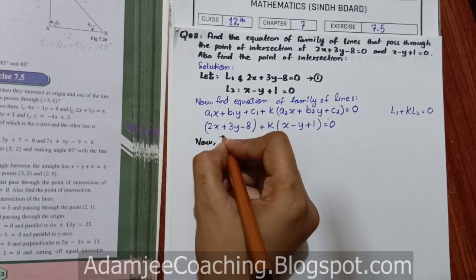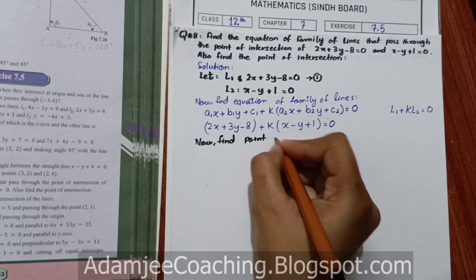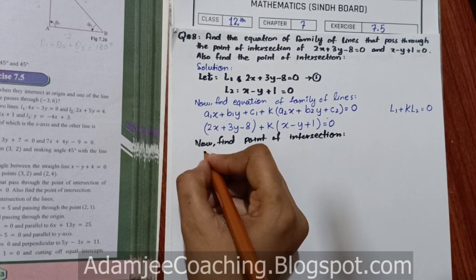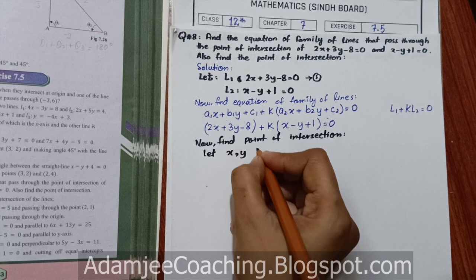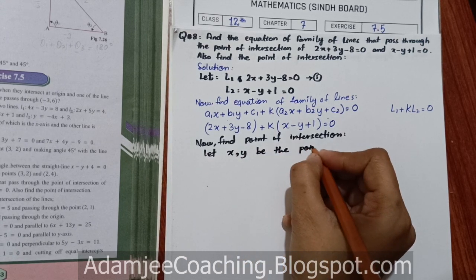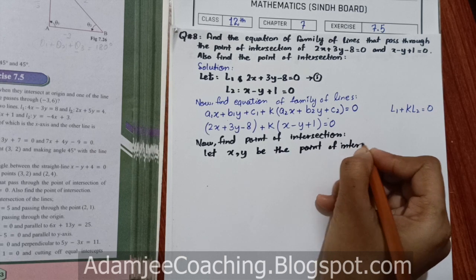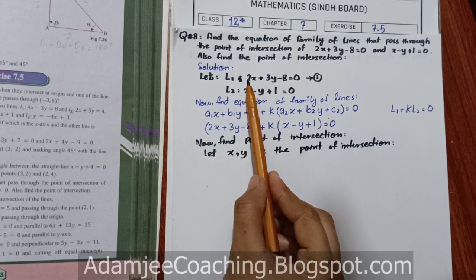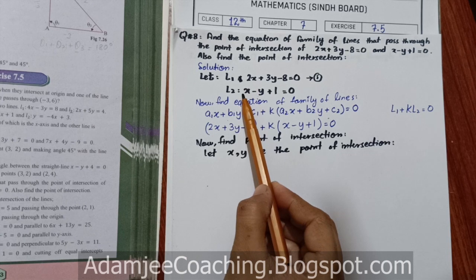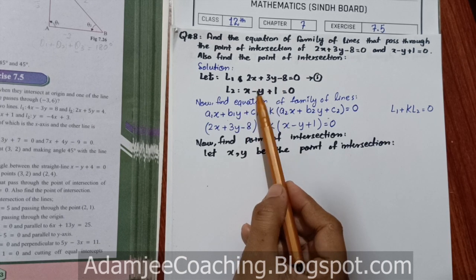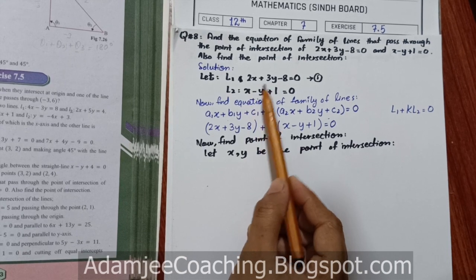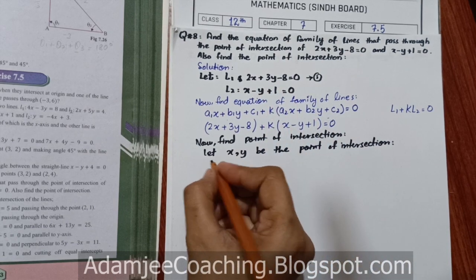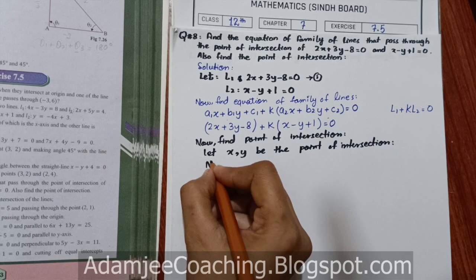Now, point of intersection. We need to find the point of intersection, i.e., find the values of x and y. Let (x, y) be the point of intersection. To find it, we will solve both equations simultaneously using the elimination method.